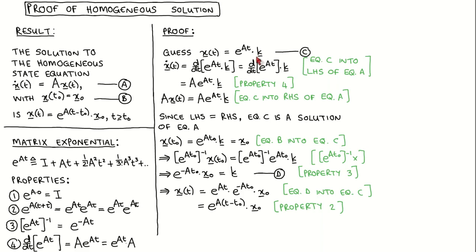We now check if it is a solution by substituting it into the homogeneous equation. The left-hand side of the homogeneous equation is x dot, which becomes the time derivative of the matrix exponential of At times k. Since k is a constant vector, we can take it out of the derivative. We now use property 4 to write x dot as matrix A times the matrix exponential of At times k. When we substitute our guess into the right-hand side of the homogeneous equation, we get this line. Since the left-hand side is equal to the right-hand side, we can conclude that our guess is in fact a solution to the homogeneous equation.